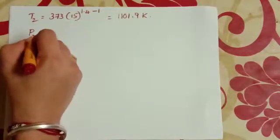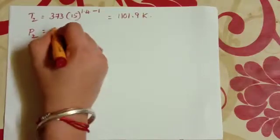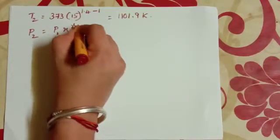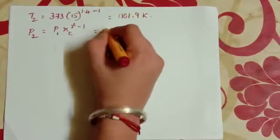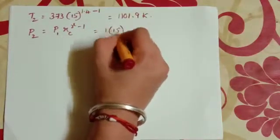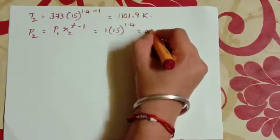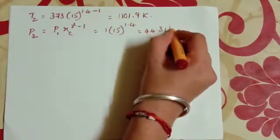Then P2, that is equal to P1 into RC raise to gamma. That is equal to 1 into 15 raise to 1.4, which is 44.31 bar.